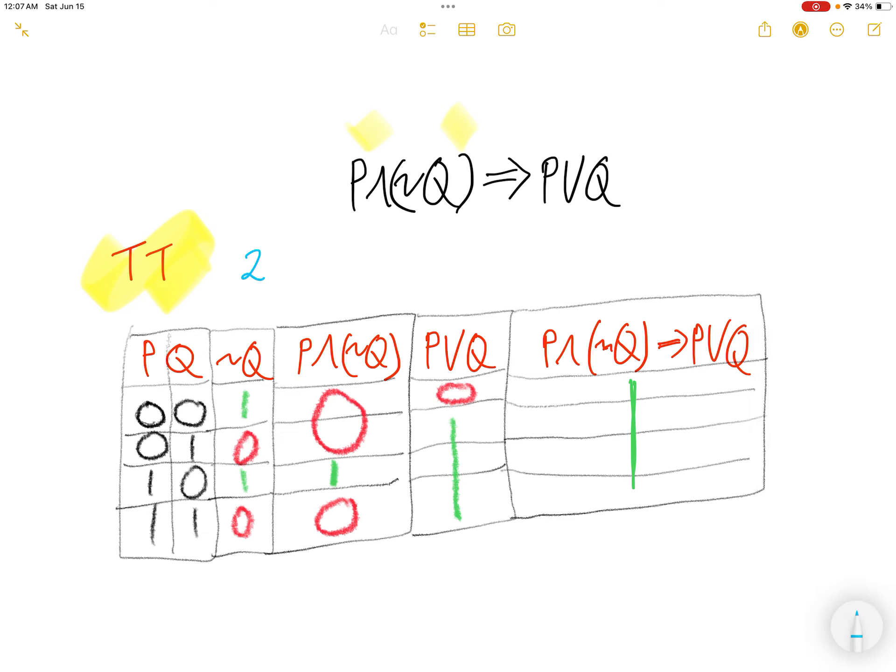And since we have two logical variables, and each logical variable can take true or false, so we have 2 to the power of 2, we have 4. So there are four input combinations.